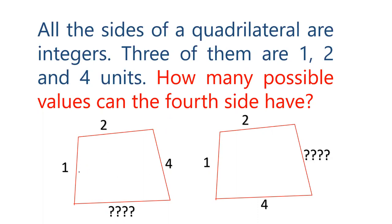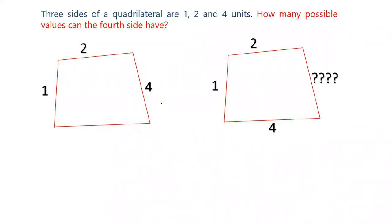That's why I made two different cases: 1, 2, 4 and 1, 2, 4. Look at this question, how can we do this? In case 1, we keep 1, 2, and 4 the same. In case 2, 1, 2, and 4 we keep the same. As I said, we will use the triangle property by making a diagonal.